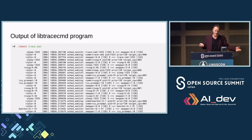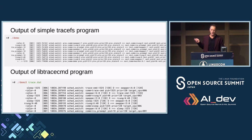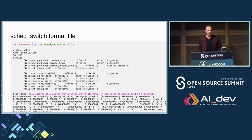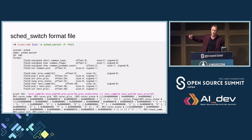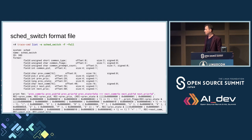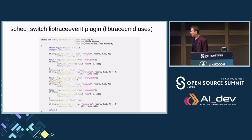You might notice a difference between the tracefs program output and the libtracecmd output. The reason is that libtracecmd also has some plugins that make things a little nicer — you can override the default print of any event and put your own way of parsing the print. This is the garbly-gook tp_printk format at the bottom that libtraceevent knows how to parse. Libtraceevent reads all this — that's why you want it.